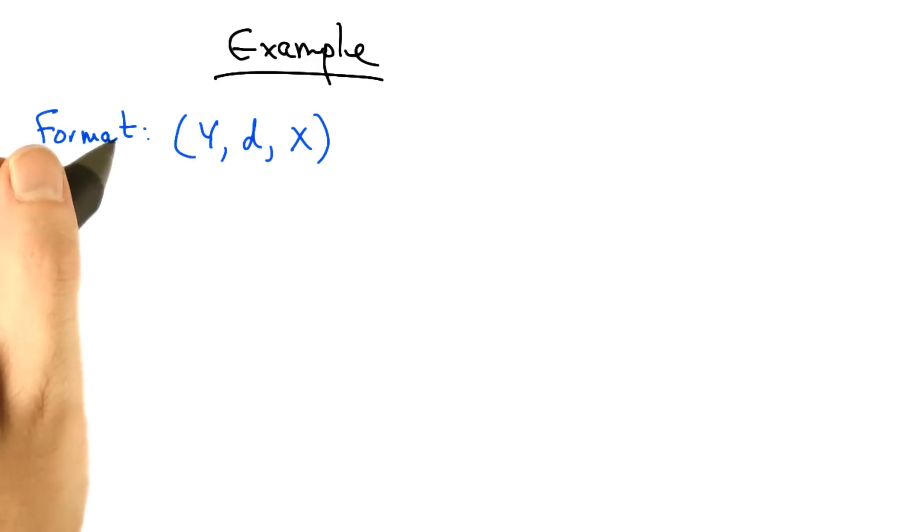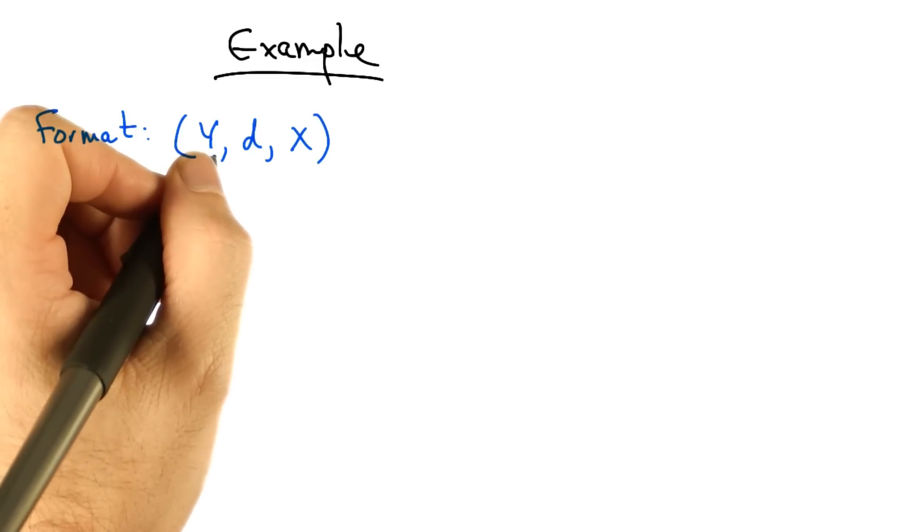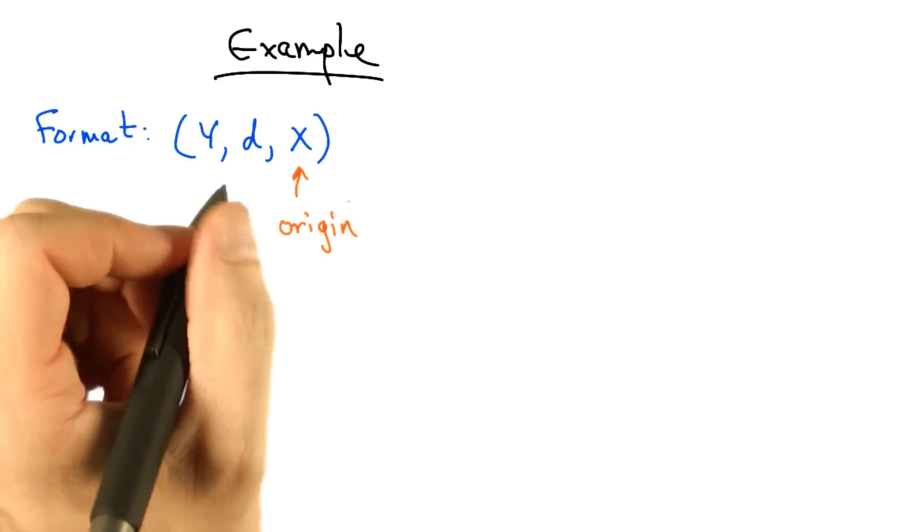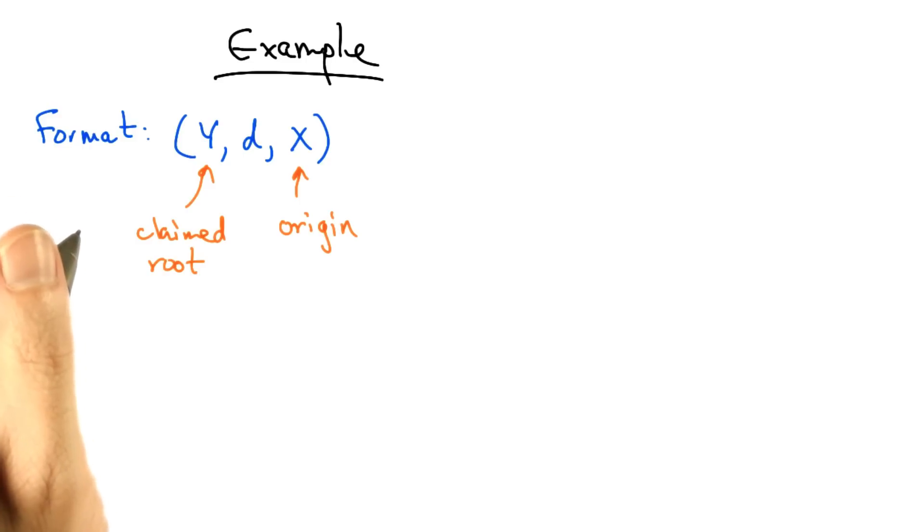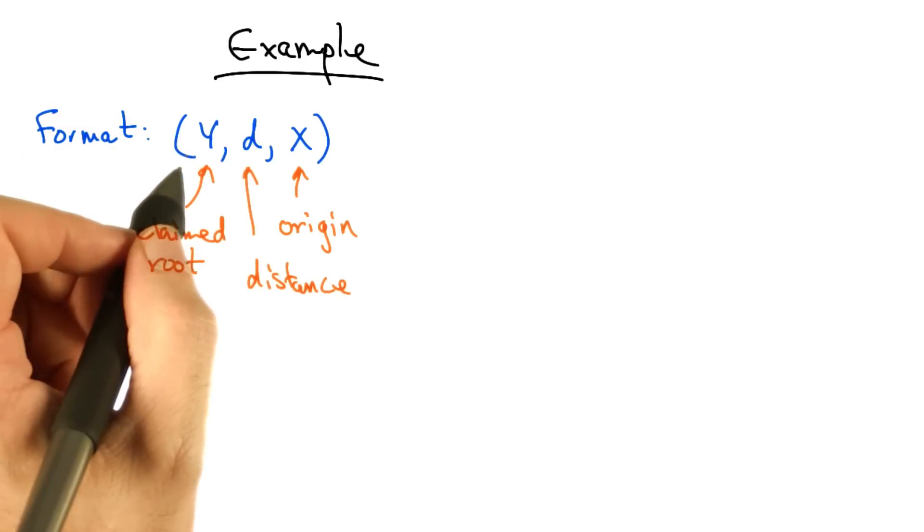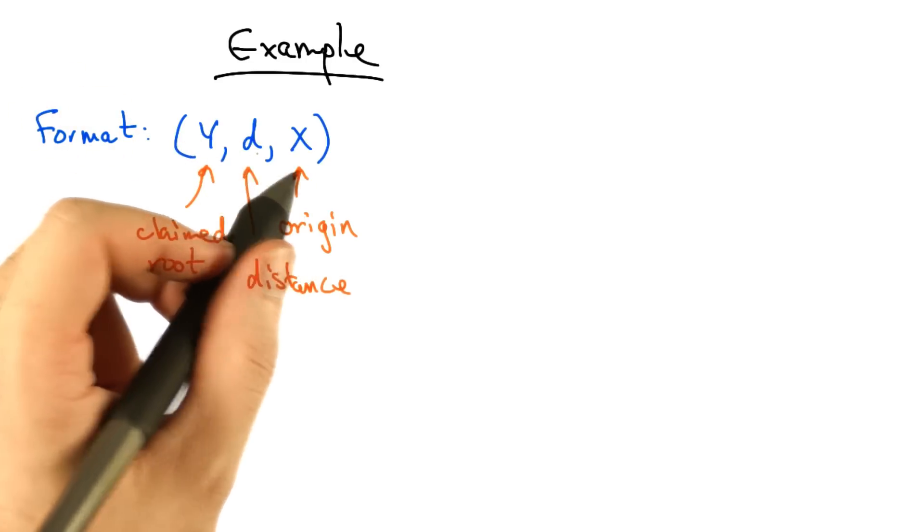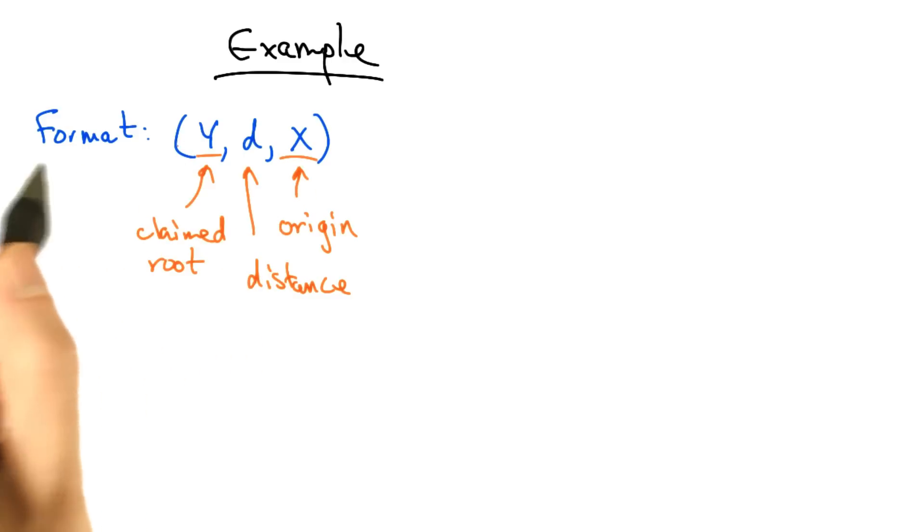Let's take a quick example. Suppose the message format is as follows: Y, D, and X, where X is the origin of the message, Y is the node being claimed as root, and D is the distance of the particular node sending this message from the claimed root.